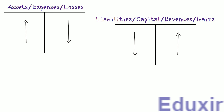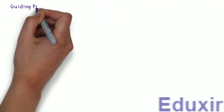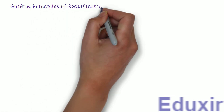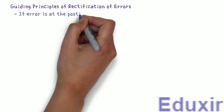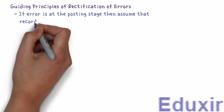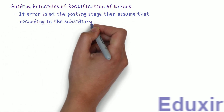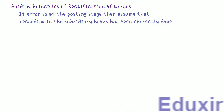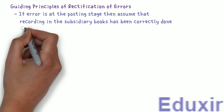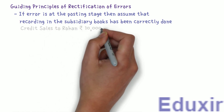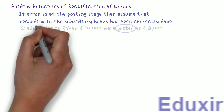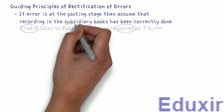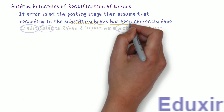To rectify the errors in this problem, we need to recall the following guiding principles of Rectification of Errors. One guiding principle is: if the error is at the posting stage, then assume that recording in the subsidiary books has been correctly done. For example, if the error is stated as credit sales to Rohan, 10,000 rupees were posted as 8,000 rupees, we note that the error has occurred during the posting stage, and assume that the recording in the sales book is done correctly.